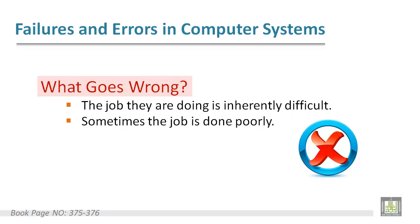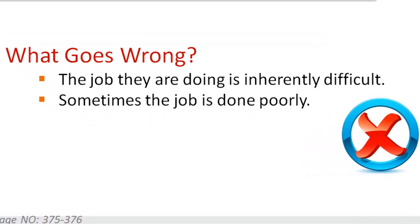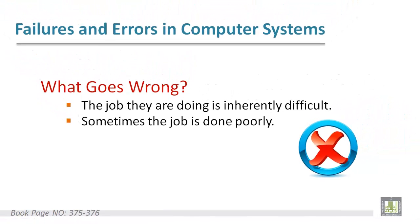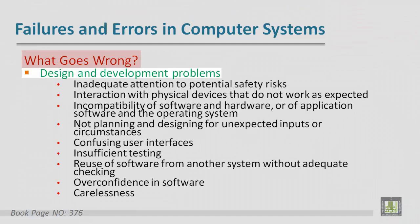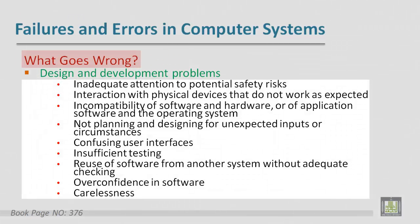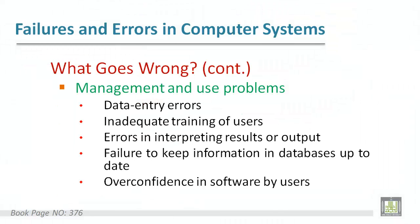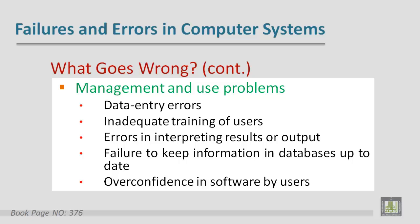What goes wrong in computer systems? First, the job itself is difficult and could be done poorly. Regarding design and development, issues include: inadequate attention to potential safety risks, interaction with physical devices that do not work as expected, incompatibility of software and hardware, no planning for unexpected input or circumstances, confusing user interfaces, insufficient testing, reuse of software from another system without adequate checking, and overconfidence in software or carelessness.